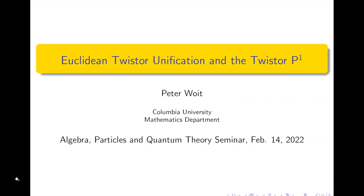Welcome everybody to our sixth seminar in the Algebra, Particles in Quantum Theory seminar series. I'm pleased to introduce tonight's speaker, Peter Voigt. Peter is a senior lecturer in the mathematics department at Columbia University in New York. He completed his PhD at Princeton and held postdoctoral positions at ITP Stony Brook and MSRI Berkeley before accepting a faculty position at Columbia. Peter is best known for stirring the pot in the high energy physics community with his book 'Not Even Wrong' and his mathematical physics blog of the same name. Tonight he will tell us about his ideas for unification, what he calls Euclidean twister unification.